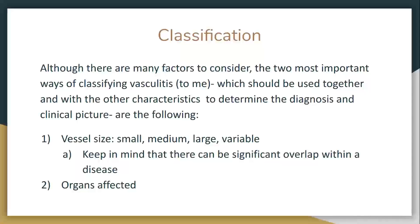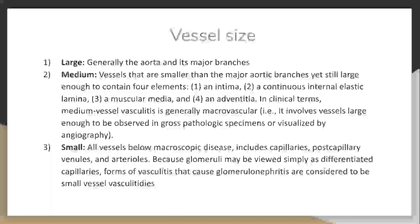If you're thinking about pulmonary-renal syndrome, you should think first about ANCA vasculitis. When we talk about vessel size — medium vessel vasculitis is the one that radiology can actually sort of see. Small vessels are all the smaller vessels below that.